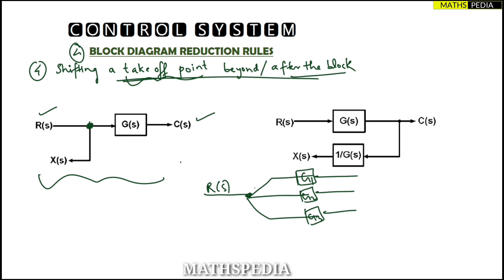If I want this to happen, I have to use one takeoff point. The takeoff point will pass on the same input to each block: output of G1 will be R(s)·G1, output of G2 will be R(s)·G2, and output of G3 will be R(s)·G3. So this input has been transferred to all three blocks. The takeoff point is basically used when you have to send the same input signal into different branches.